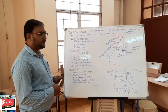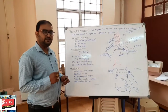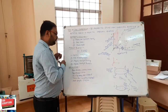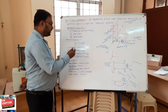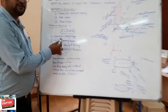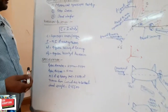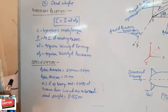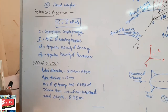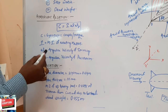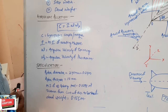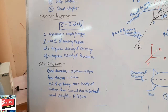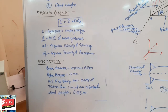The gyroscopic relation is C equals I into omega into omega-p, where C is the gyroscopic couple or torque, I is the moment of inertia of rotating masses, omega is the angular velocity of spinning, and omega-p is the angular velocity of precession.